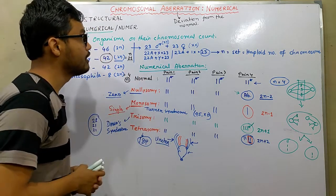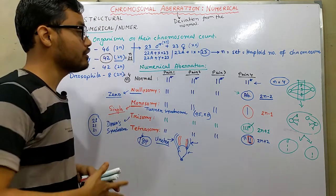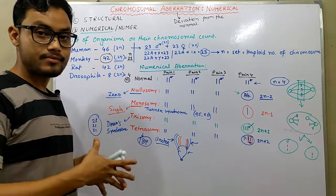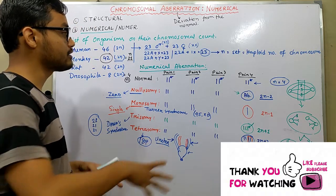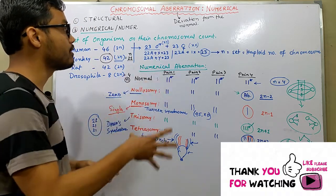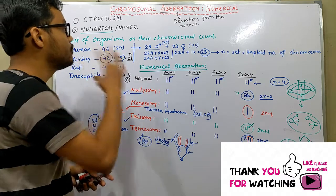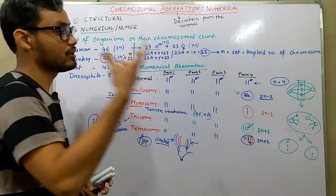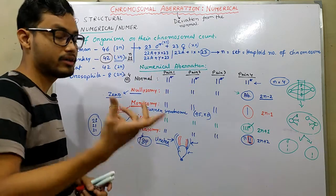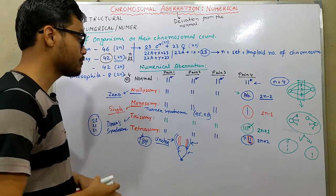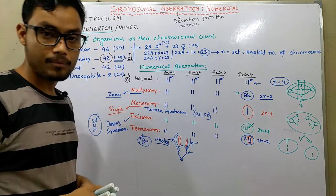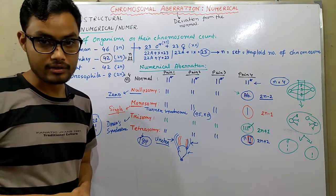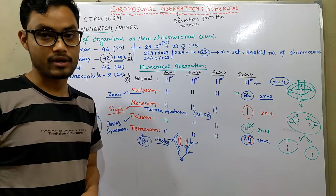This was all about numerical chromosomal aberrations. I hope this video is helpful for you to understand the overview of numerical aberrations — what constitutes a set of chromosomes, what is haploid, and what is the diploid number of chromosomes. If you liked the video, please hit the like button, don't forget to subscribe, and thanks for watching.